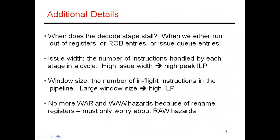Two other important concepts are issue width and window size, both key determinants of overall performance. Issue width refers to how many instructions can be simultaneously processed in every single stage of the pipeline. If issue width is four, then every cycle I can fetch four instructions into the IFQ, decode four, execute four on the ALUs, and commit four. Under ideal scenarios, the peak IPC would be four. But there will also be cycles where almost nothing can issue, so there are several cycles where IPC is much less than four.